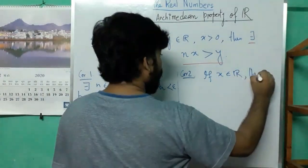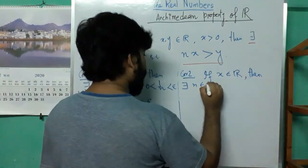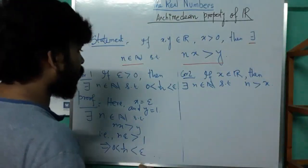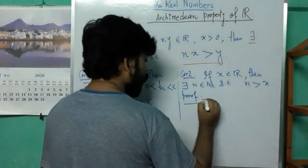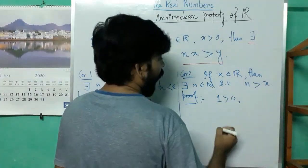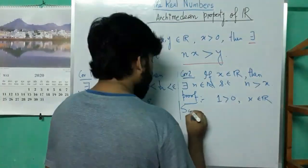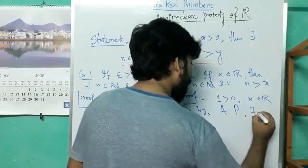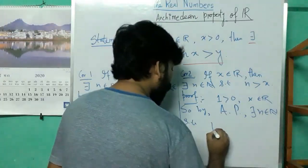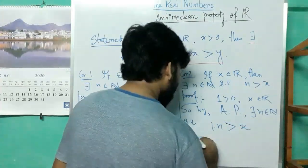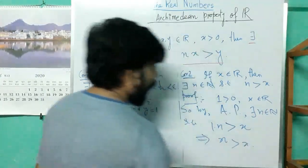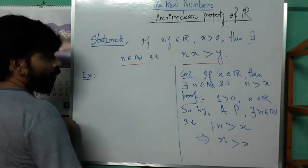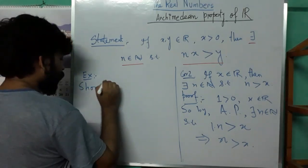Next application of the Archimedean property: if x is any real number, then there exists a natural number n such that n > x. The proof is obvious because 1 is positive and x is any real number, so by the Archimedean property there is a natural number n such that 1·n > x, that is n > x.